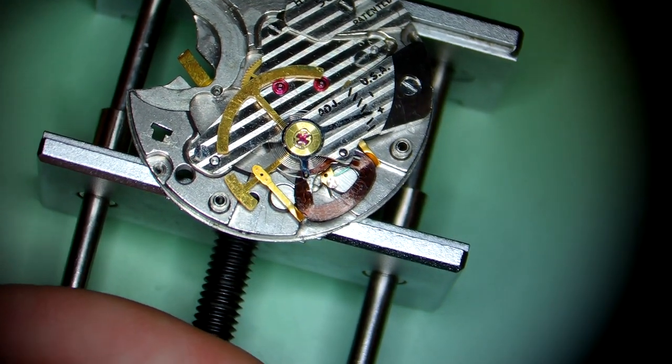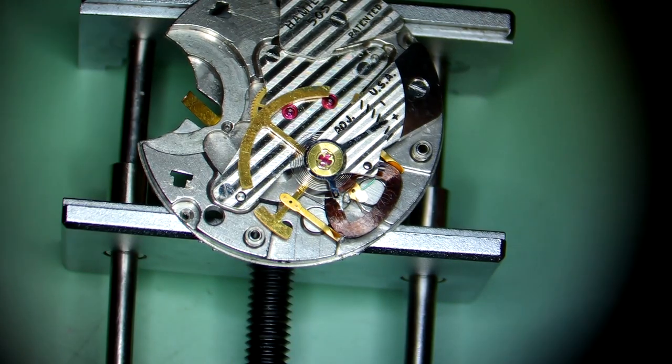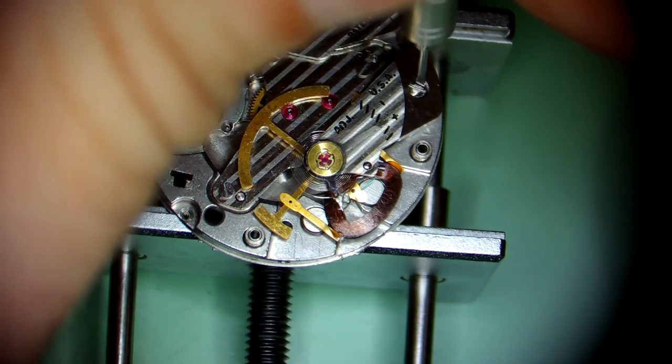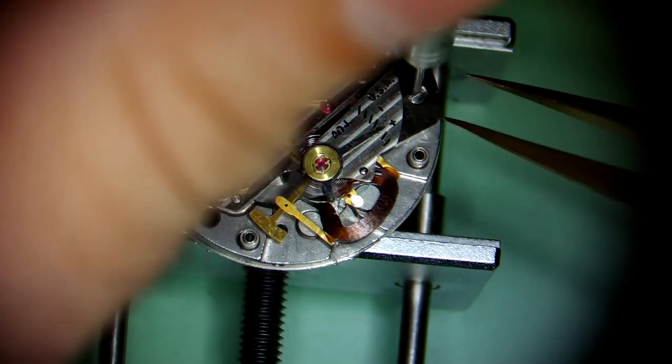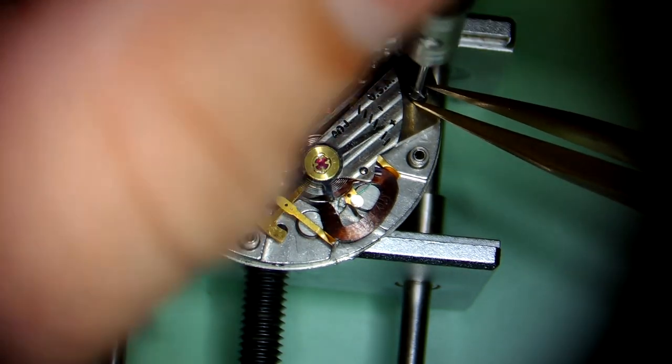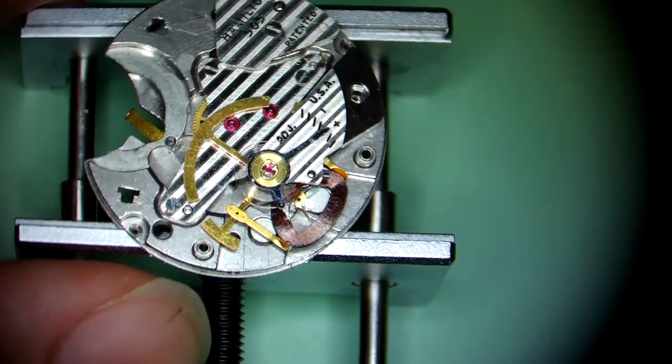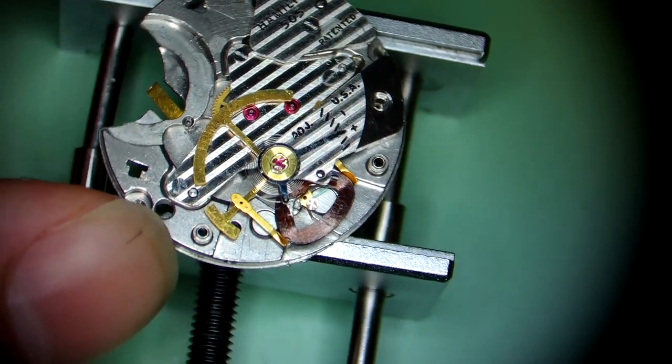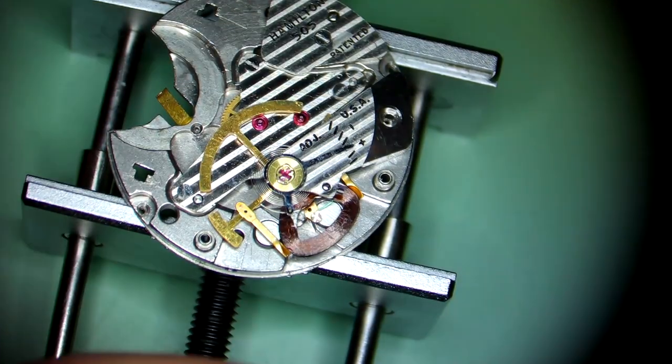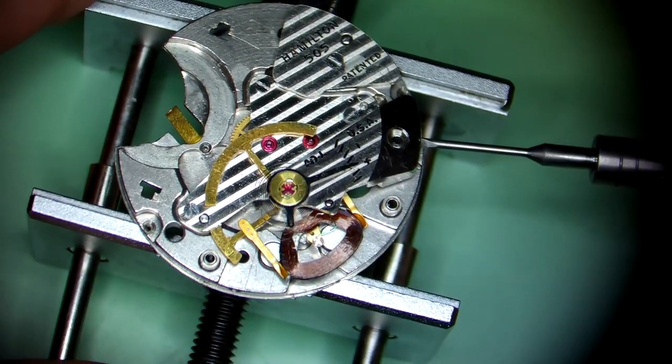One thing you're going to see throughout as I disassemble this watch is that a lot of the parts are magnetized. I don't know if they have any actual effect on the way the watch runs, but they're magnetized, and sometimes they spring away in funny ways from the tweezers or the screwdriver.